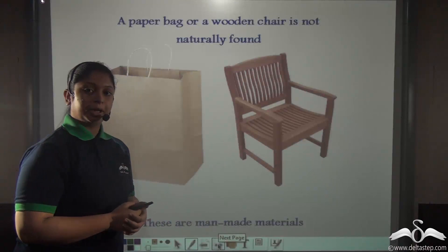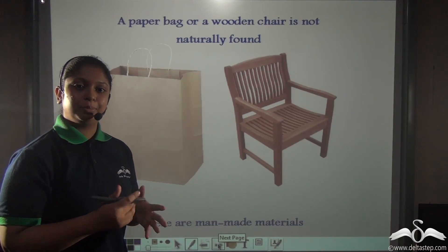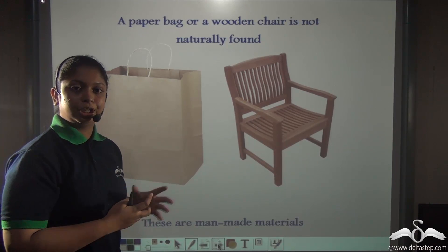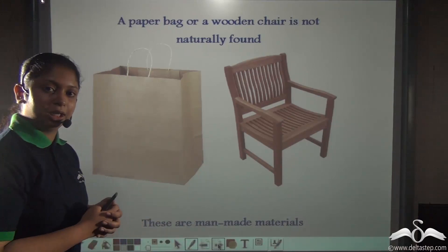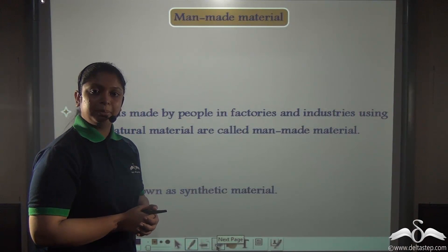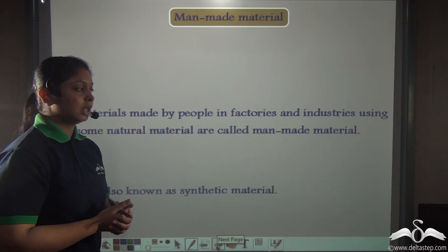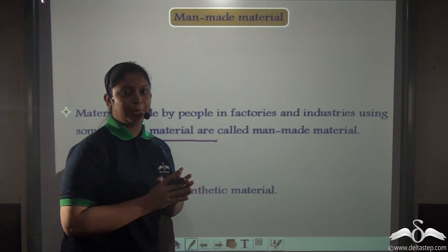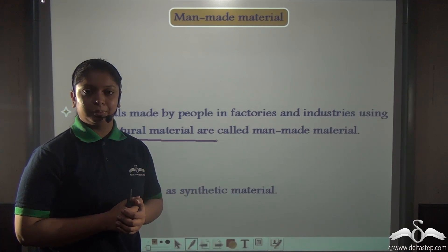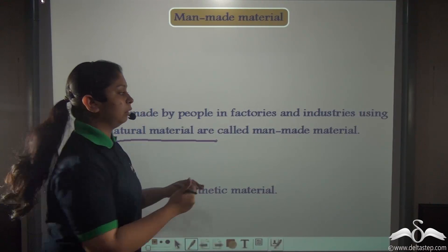A paper bag or a wooden chair — can you find this in nature? Well, no. A paper bag or a wooden chair is made by humans by obtaining a natural material like wood. So man can modify the wood in order to make paper bags or a wooden chair. Therefore, these items are known as man-made materials. A man-made material is made by people in factories and industries by using some natural material.